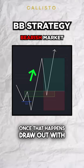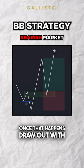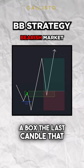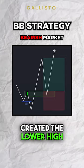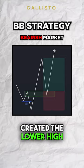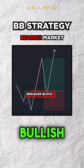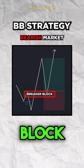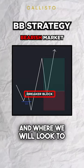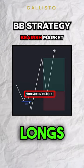Once that happens, draw out with a box the last candle that created the lower high. This is the bullish breaker block, and where we will look to take our longs from.